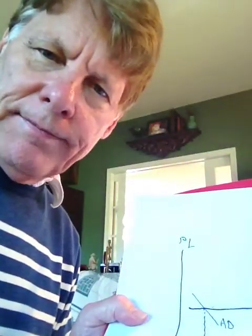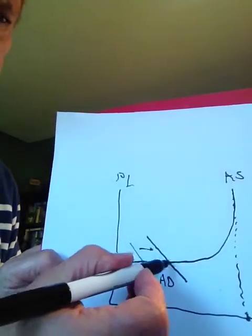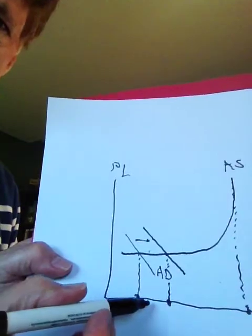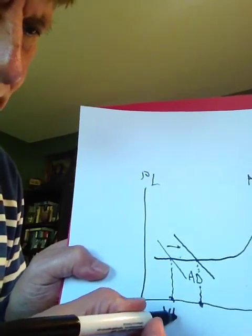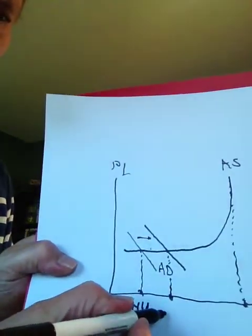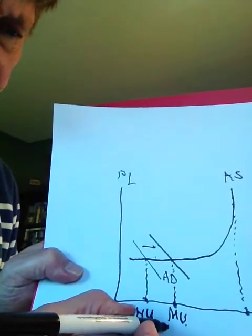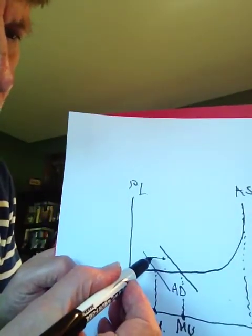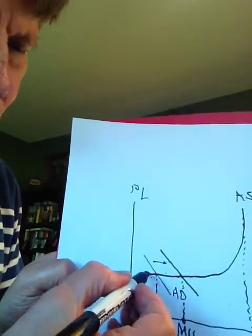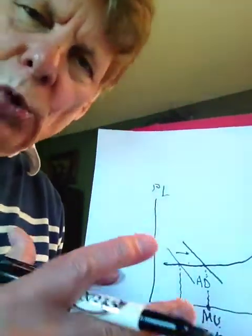If the aggregate demand curve shifts to the right, the level of output would be higher and unemployment would be lower. At the first intersection we can call high unemployment — maybe 10 percent or more. At the next we can call moderate unemployment — roughly 7 to 10 percent. As the aggregate demand curve shifts to the right and output goes up, notice that nothing is happening to the price level. The reason: people hired at high unemployment levels are the most productive in the pool.